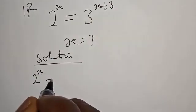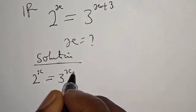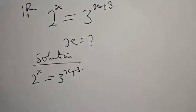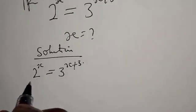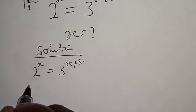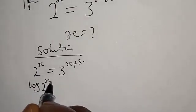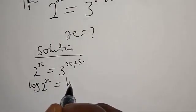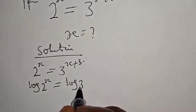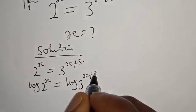2 raised to power x is equal to 3 raised to power x plus 3. I will take the log of both sides. Log 2 raised to power x is equal to log 3 raised to power x plus 3.